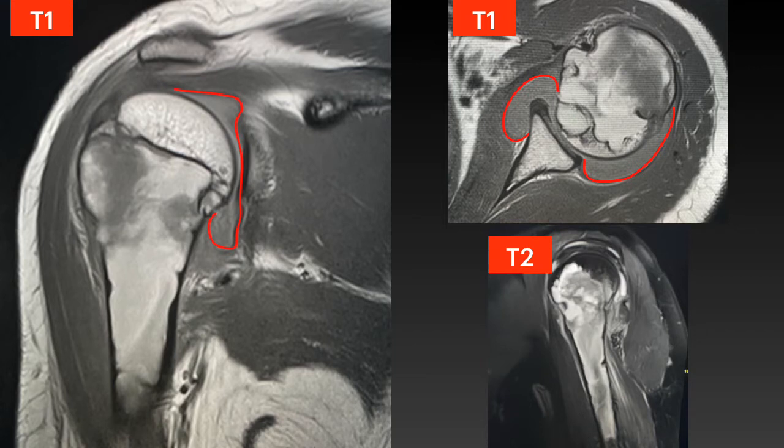This lesion shows a combination of increased and decreased T1 and T2 signal intensity related to fracture and hemorrhage within the lesion. The increased T1 signal intensity is related to methemoglobin. Usually these lesions show decreased T1 signal intensity and increased T2 signal intensity in the absence of fracture. There is an associated glenohumeral hemarthrosis due to the fracture.